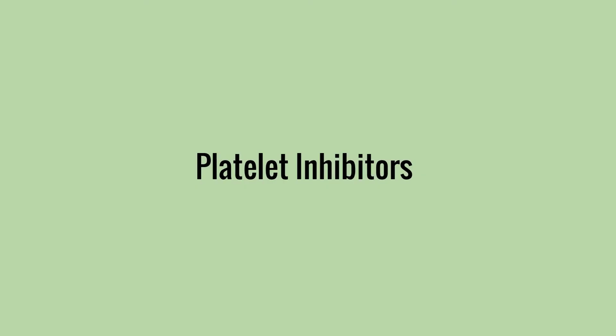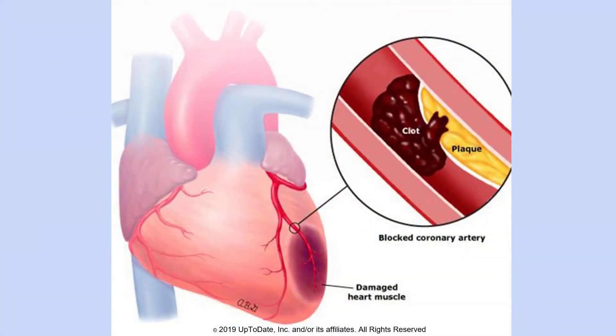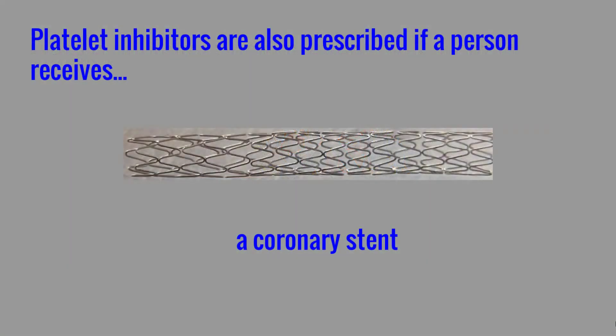Platelet inhibitors will be discussed next. These medications help decrease clot size. Some people are aware that aspirin is a platelet inhibitor, but other ones exist as well. Clopidogrel, also known as Plavix; ticagrelor, also known as Brilinta; and prasugrel, also known as Effient, are the other platelet inhibitors. Like aspirin, they prevent platelets from clumping together. A heart attack occurs when a blockage or plaque suddenly ruptures and a clot forms that blocks blood flow. Platelet inhibitors help prevent clots from forming, decrease the risk of repeat heart attack, and improve survival rates. Platelet inhibitors are also prescribed if a person receives a coronary stent.